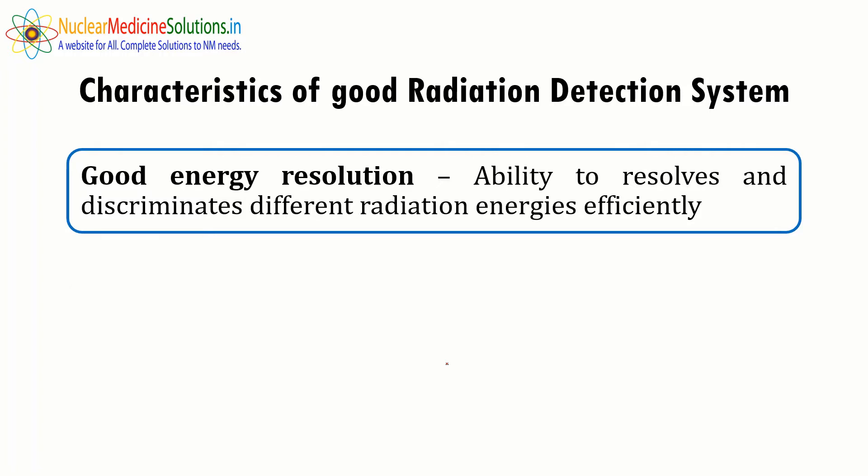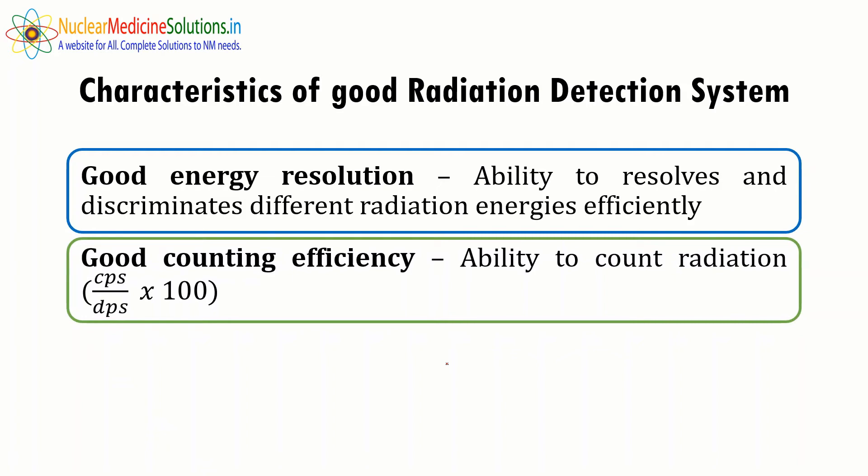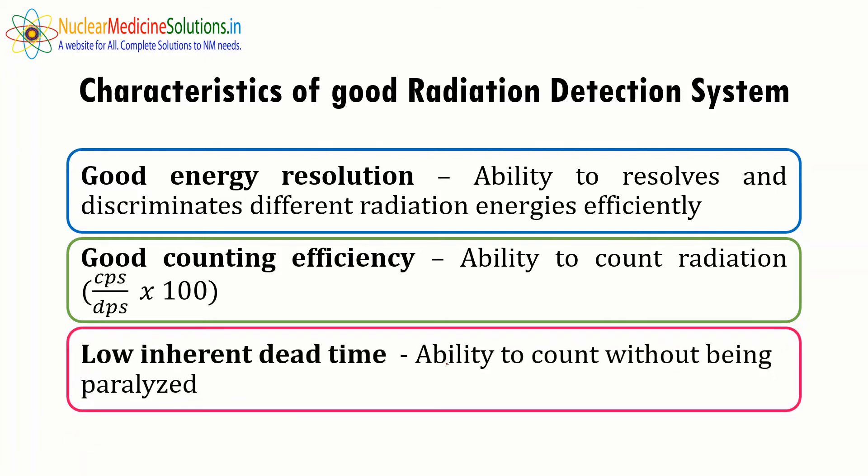The second property is good counting efficiency — the ability to count radiation. In ideal conditions, a good radiation detection system should have 100% efficiency, meaning whatever radiation falls on it should be counted. The formula for calculating radiation efficiency is CPS divided by DPS multiplied by 100 — that is counts per second divided by disintegrations per second, multiplied by 100.